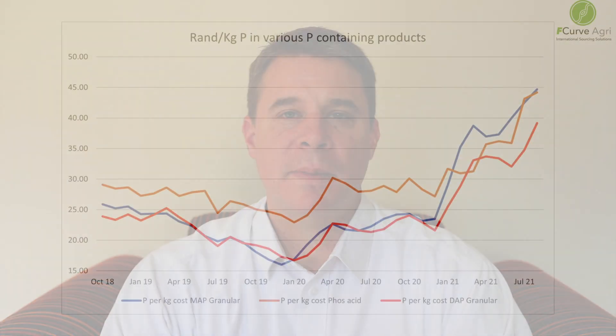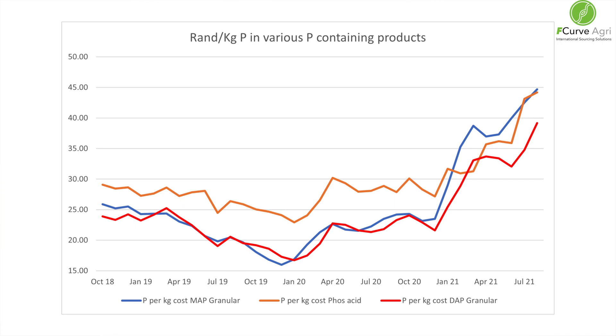Most phosphoric acid is consumed on site. The small portion that is traded mostly ends up in India, so India is the key determiner of phosphoric acid prices. Typically these prices are agreed on a quarterly basis between the handful of producers and the Indians. The phosphate in phosphoric acid is usually more expensive than the phosphate in MAP and DAP because of the small number of players that produce and consume phosphoric acid.